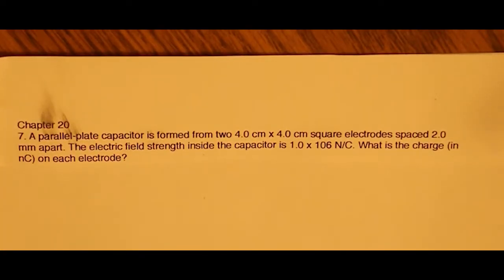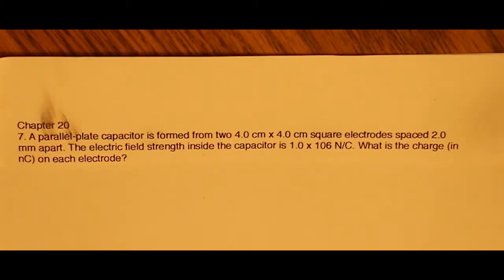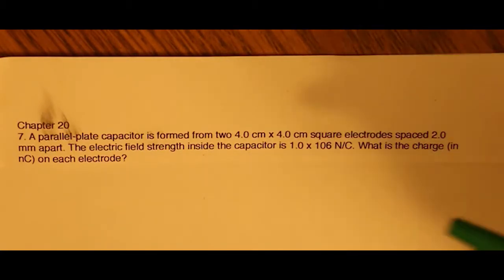In the question we're dealing with a parallel plate capacitor that is formed from two 4 cm × 4 cm square electrodes spaced 2 mm apart. The electric field strength inside the capacitor is 1.0 × 10^6 N/C. What is the charge in nanocoulombs on each of the electrodes?